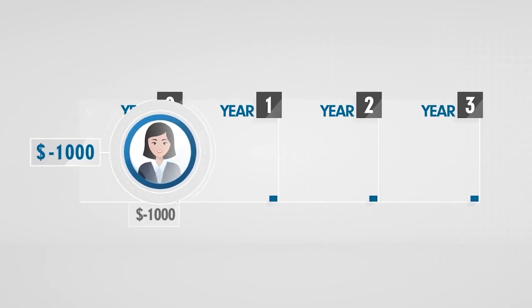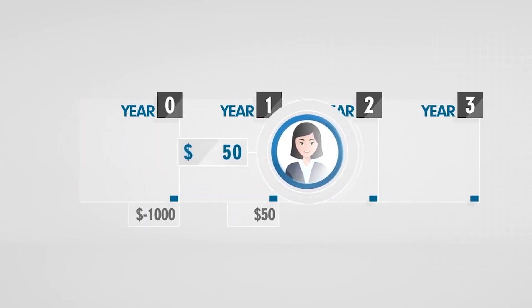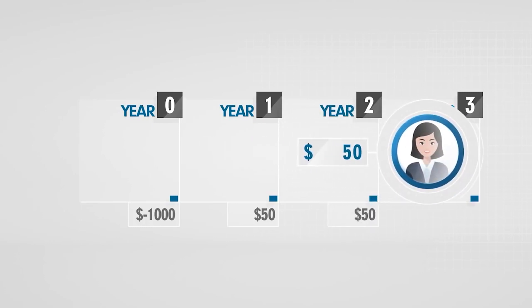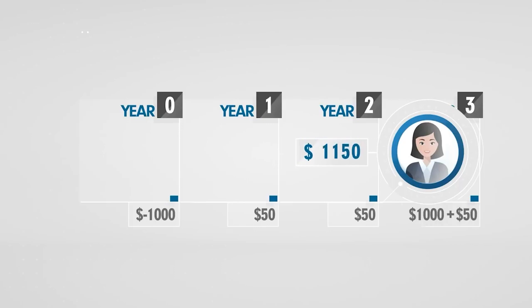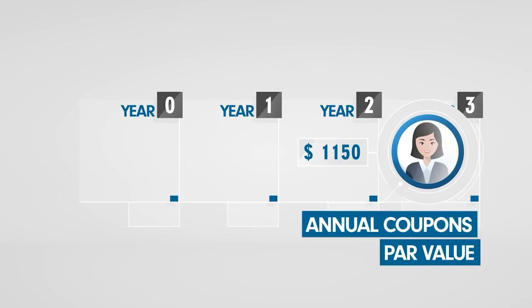The investor will receive a $50 coupon in year one and another $50 coupon in year two. When the bond matures in year three, the investor will receive another $50 coupon plus $1,000 capital, which was the original cost of the bond. This $1,150 payment is agreed when the bond is issued, with the investor receiving annual coupons and par value when the bond matures.